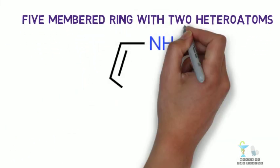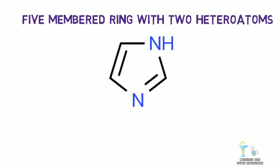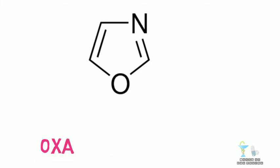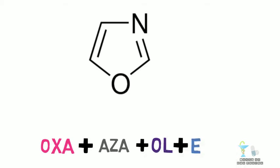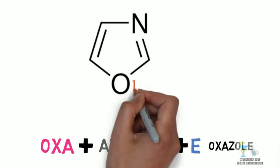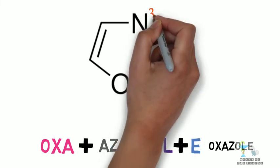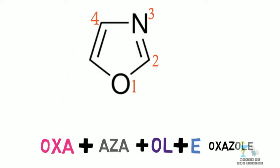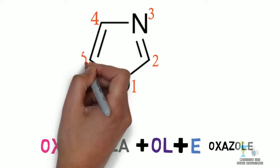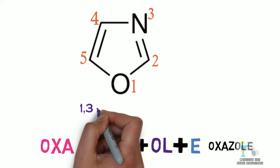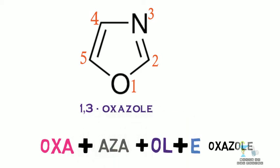Then five-membered ring with two heteroatoms. This is 1,3-diazole. In this example, OXA for oxygen, AZA for nitrogen, and OL for five-membered ring, and E for unsaturation. OXA plus AZA plus OL plus E equals OXAZOLE. Here the oxygen is given first priority and then nitrogen. Numbering it, one, two, three, four, five. Finally we get 1,3-OXAZOLE.